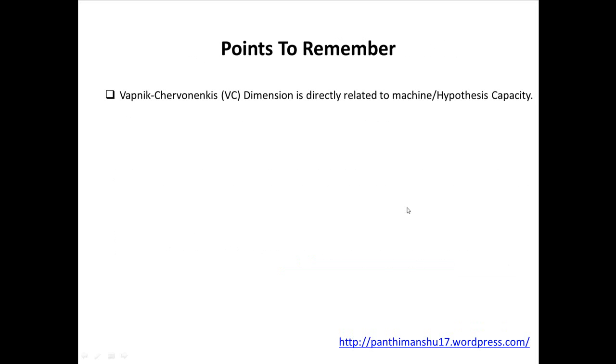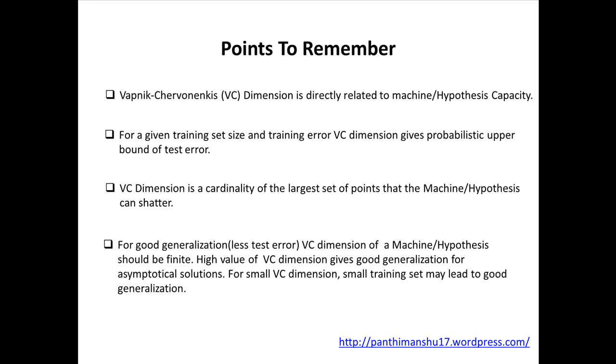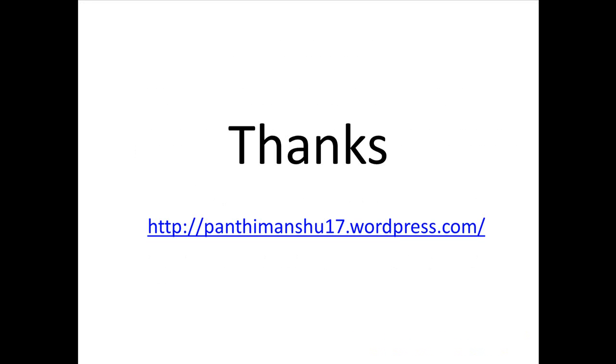Finally, points to remember. Vapnik-Chervonenkis dimension is directly related to machine capacity. For a given training set size and training error, VC dimension gives probabilistic upper bound on test error. VC dimension is a cardinality of the largest set of points that the machine can shatter. For good generalization, VC dimension of a machine should be finite. High value of VC dimension gives good generalization for asymptotical solutions. For small VC dimension, small training set may lead to good generalization.